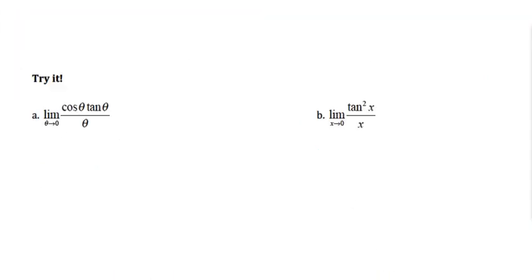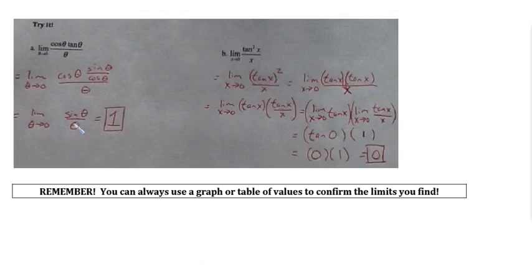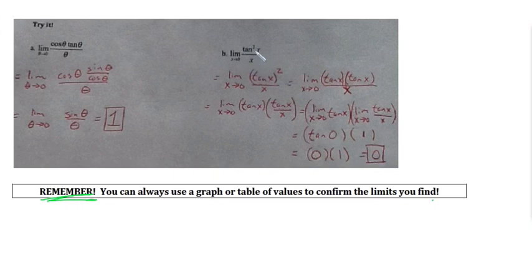Try A and B on your own. Welcome back — go ahead and check your work and jot down any questions. Remember, you can always use a graph or table of values to confirm the limits you find. Type the function in your graphing calculator and verify that as x approaches 0 from the left and right you get the expected answer. That's been Finding Limits Analytically — thanks for watching and we'll see you in class.